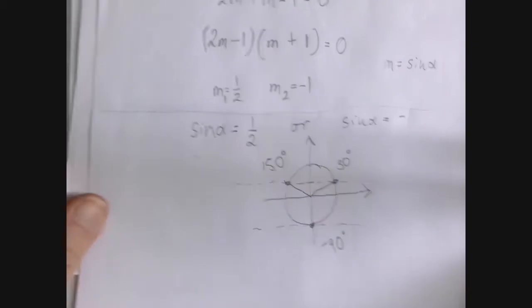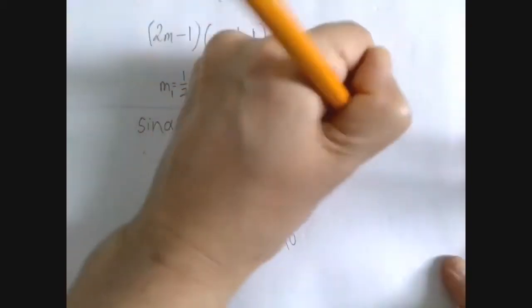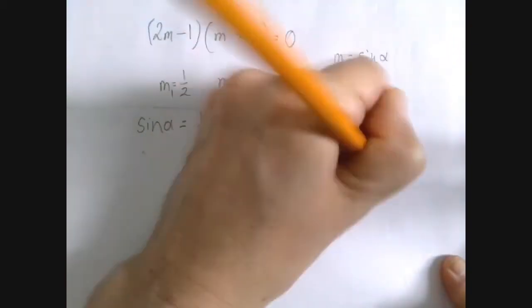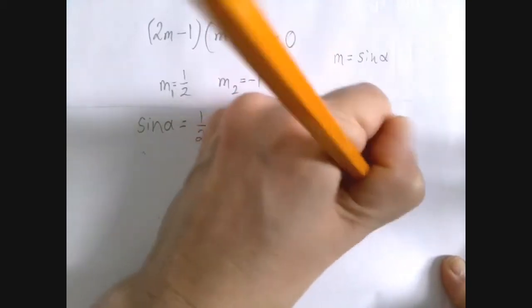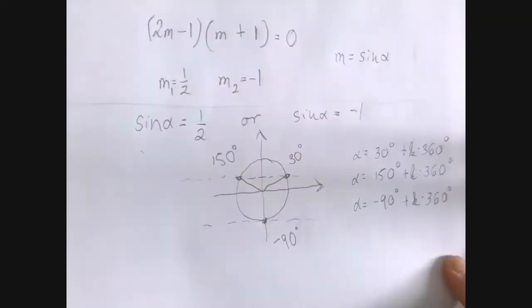The solution set would be alpha is either 30 degrees or 150 degrees or negative 90 degrees, or co-terminal angles.